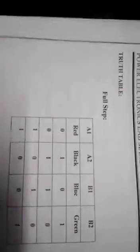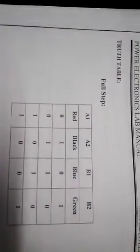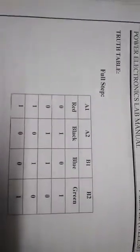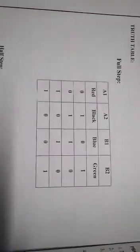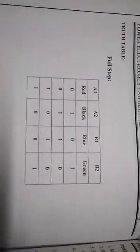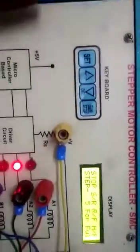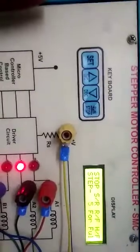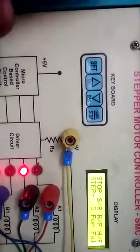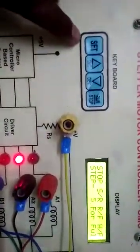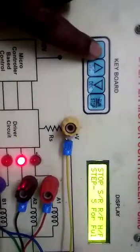This is the truth table of the full step. By using the keyboard we can also set for reverse bias condition.